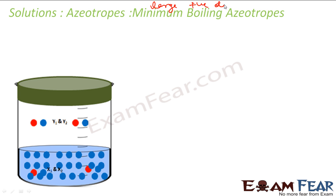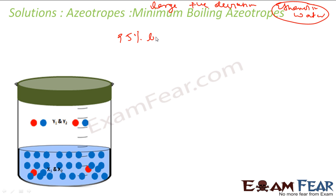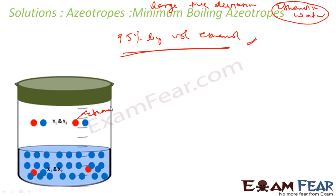Minimum boiling azeotropes show large positive deviation. An example is ethanol and water. If you obtain an ethanol-water mixture from sugar fermentation and perform fractional distillation, you get a solution of approximately 95% ethanol by volume. Once this composition is achieved, the liquid and vapor will have the same composition and you can't separate them further using fractional distillation. This is an example of a minimum boiling azeotrope.